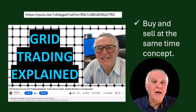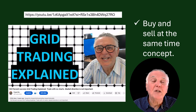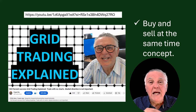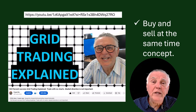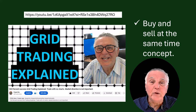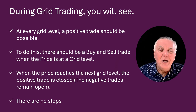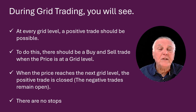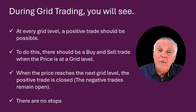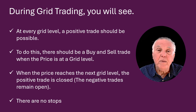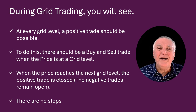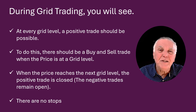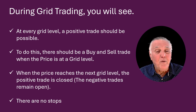What happens is you buy and sell at the same time to make sure every transaction has a chance of success. Secondly, there's the multiplier concept: because of the wavy nature of the market, the same transaction repeats itself over and over again — that's the grid multiplier. At every grid level a positive trade should be possible, so no matter whether the price goes up or down, this is a directionless system.